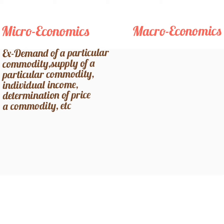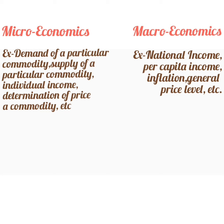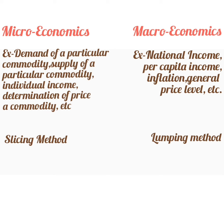Under macroeconomics, we study things like national income, per capita income, inflation, or general price level. Under microeconomics, the economy is split into small individual units and each is studied separately — hence microeconomics uses the slicing method. Since macroeconomics studies the economy as a whole, it uses the lumping method.